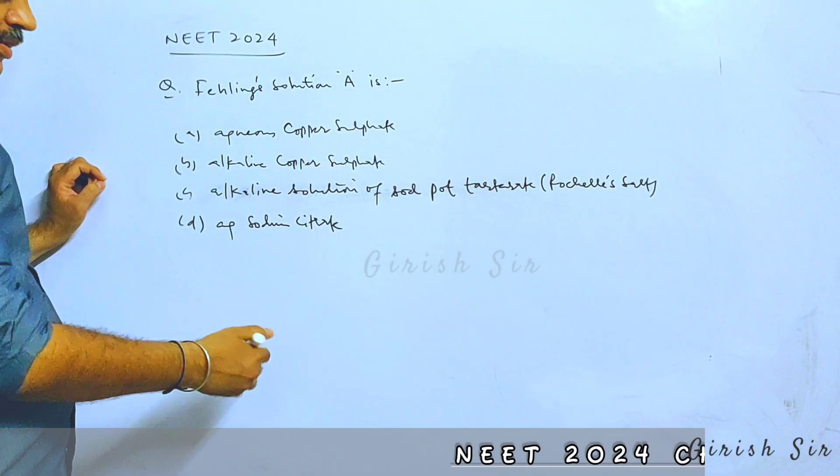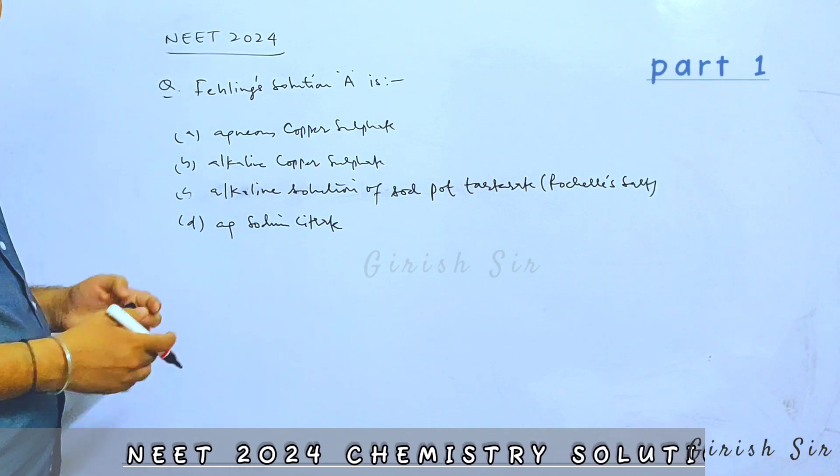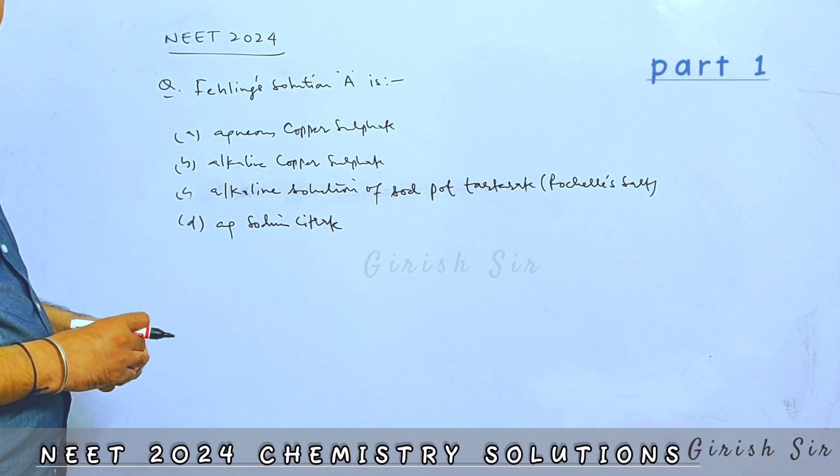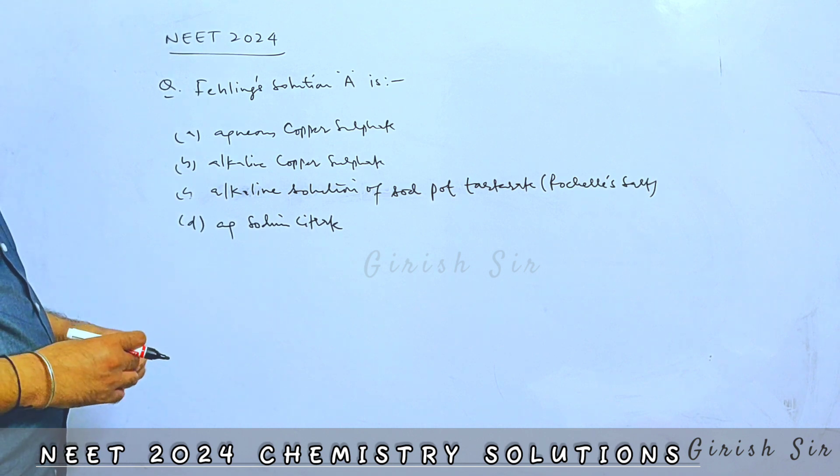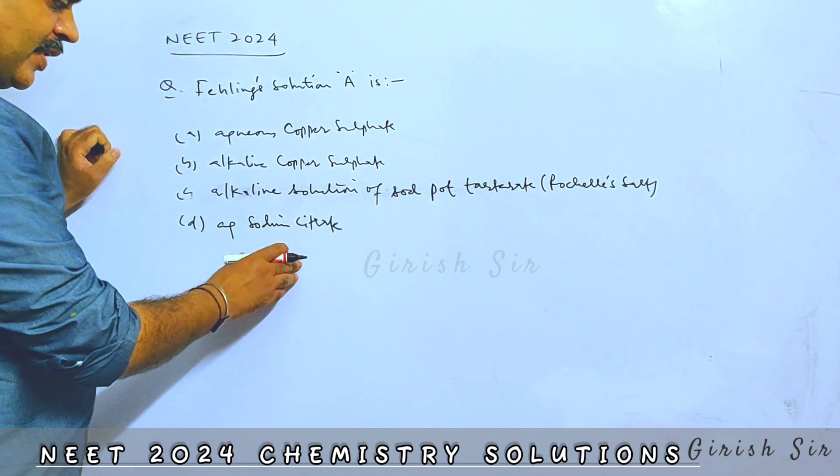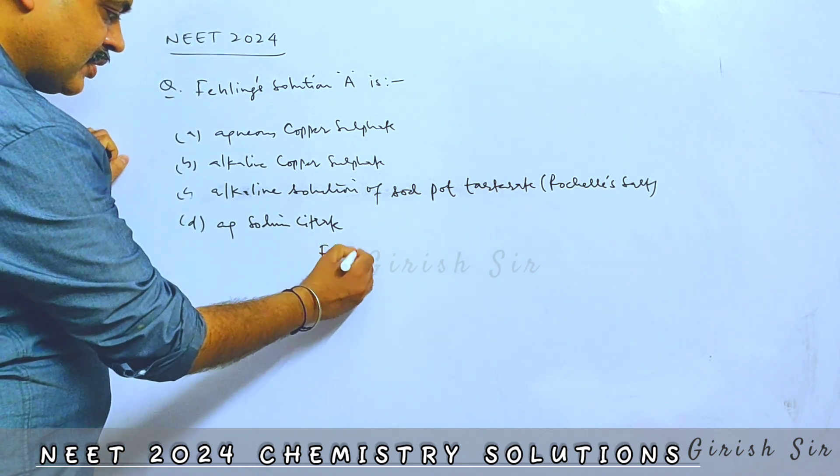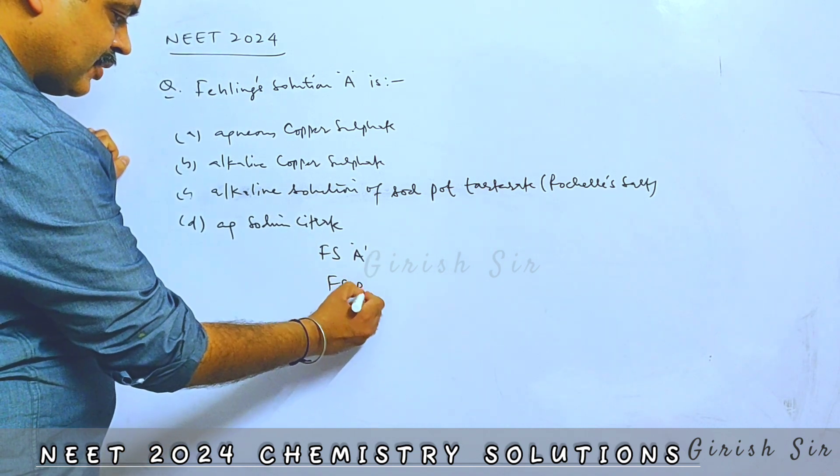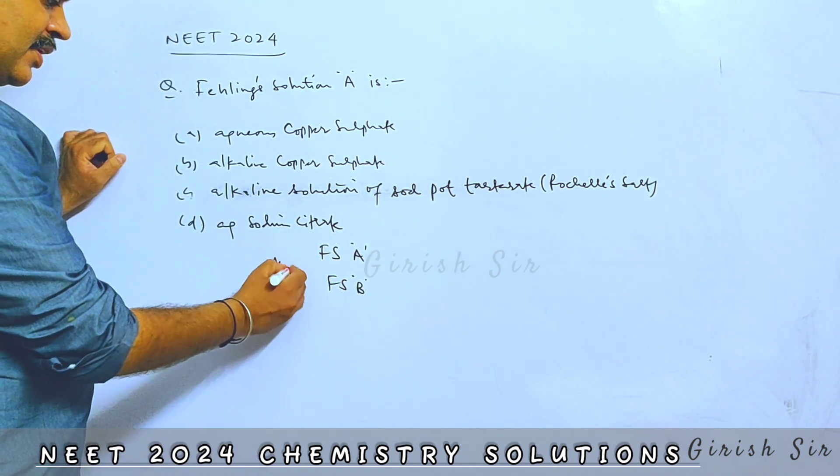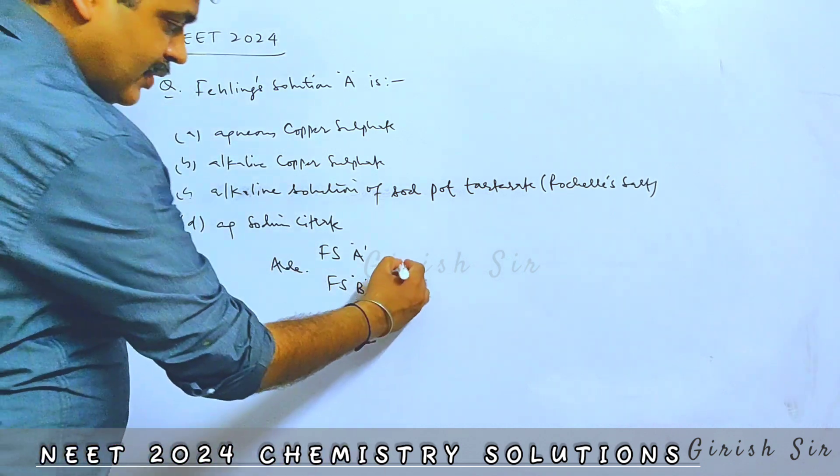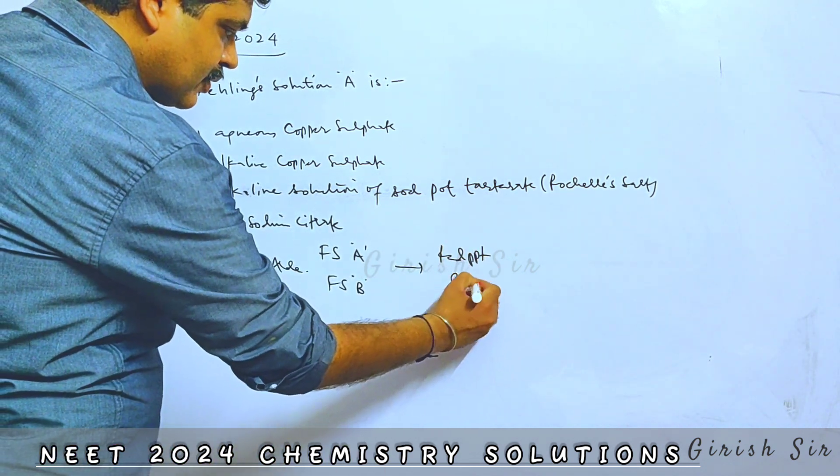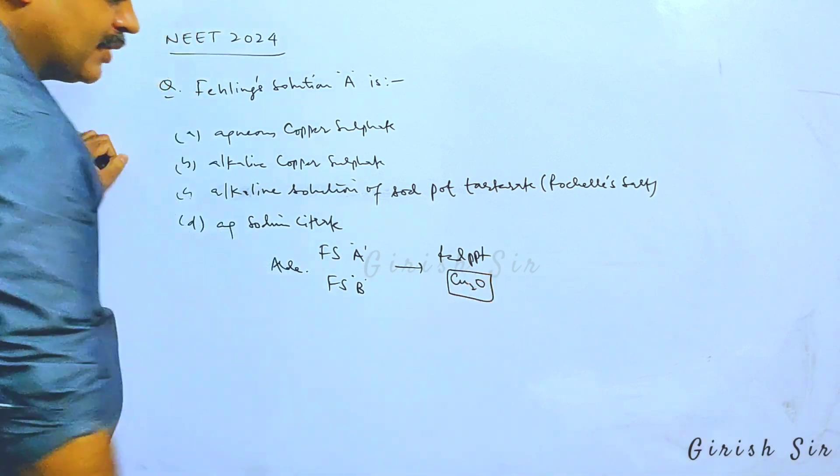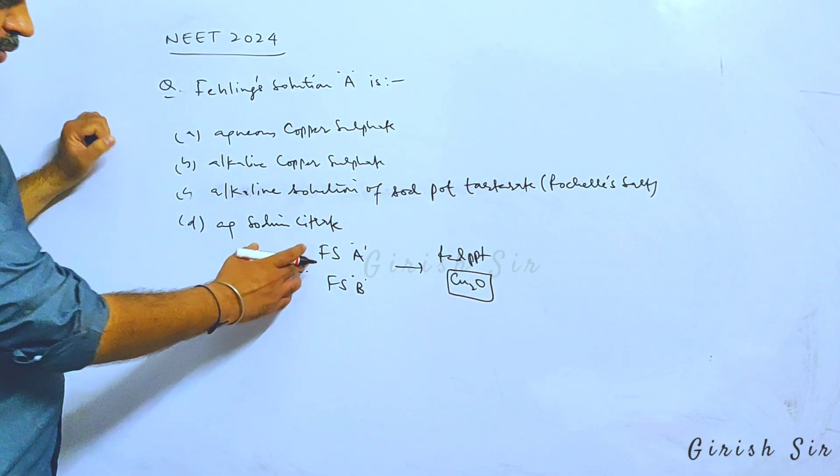Fehling solution is generally used in identification of aldehyde group, presence of aldehyde group. It gives a positive Fehling test, whereas ketones generally don't answer Fehling test. So in Fehling test we use Fehling solution A and Fehling solution B and add it to an aldehyde, which forms a red precipitate of cuprous oxide. This is the positive Fehling test shown by aldehydes.